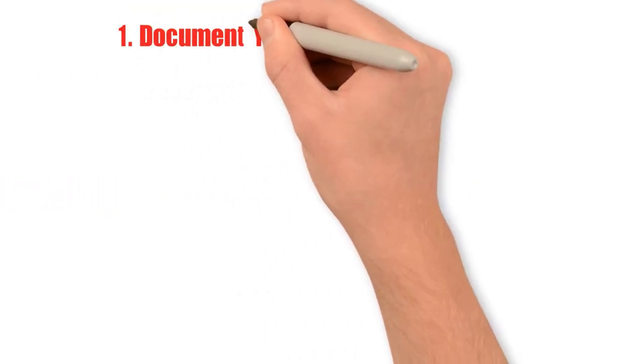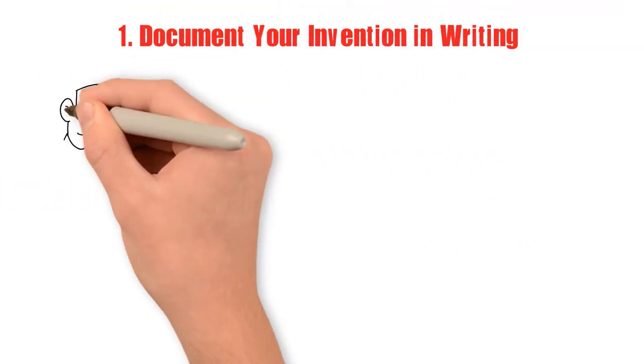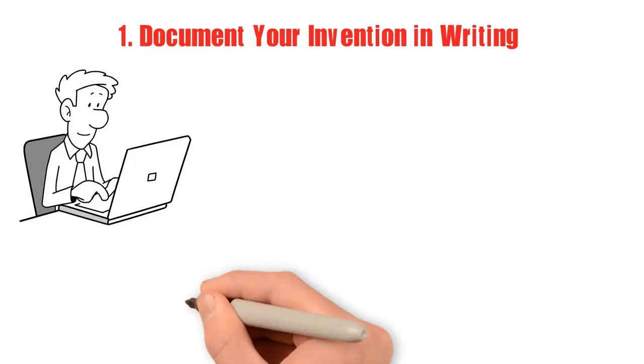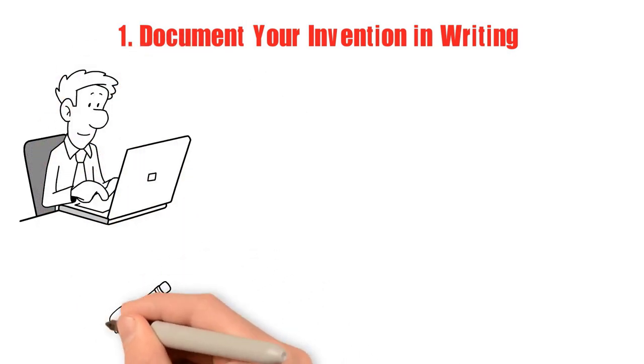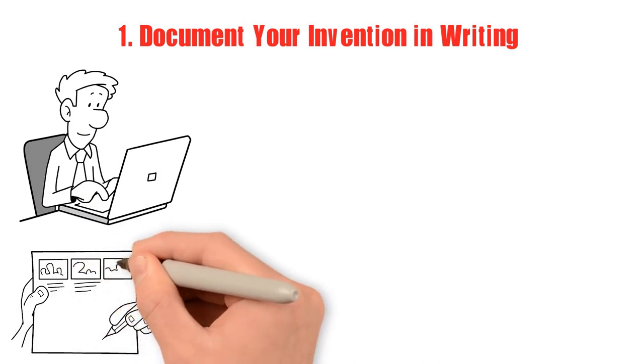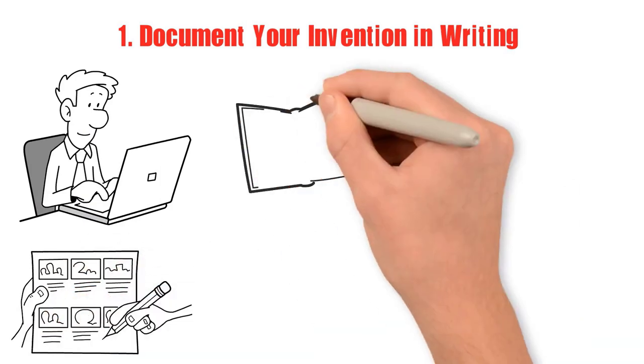1. Document your invention in writing. In a notepad, note each phase of the innovation process. Include a description and a schematic of every feature and alteration of the invention, detailing how you first came up with the concept.